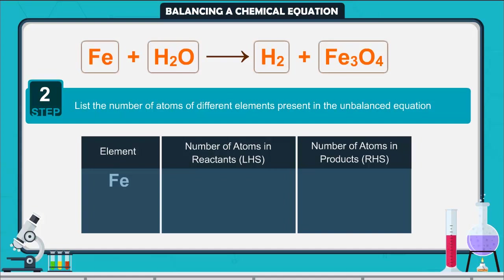The elements we have are iron, hydrogen, and oxygen. On the left-hand side: iron has one atom, hydrogen has two atoms, and oxygen has only one atom. On the right-hand side: iron has three atoms, hydrogen has two atoms, and oxygen has four atoms.